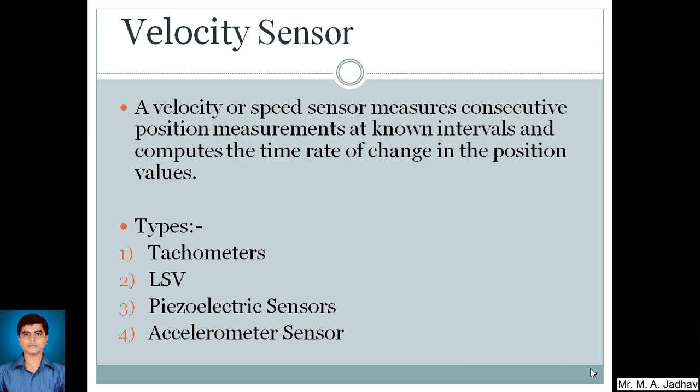So let's see what is the velocity sensor. A velocity or speed sensor measures consecutive position measurements at known intervals and computes the time rate of change in the position values.